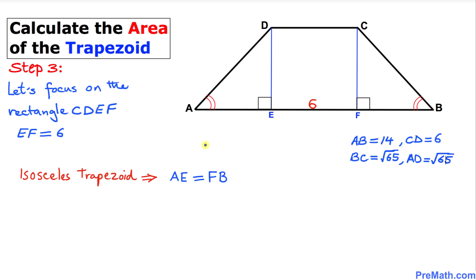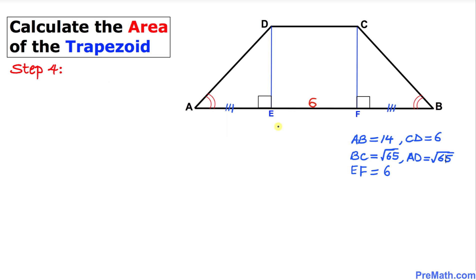Since we are dealing with an isosceles trapezoid, side AE is going to be the same length as FB. Let's call this length X, so AE equals X and FB equals X. The total length of side AB is then X plus 6 plus X.